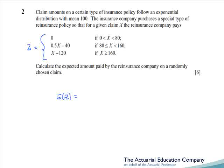To get e of z, we'll split our distribution up into three parts, 0 to 80, 80 to 160, and greater than 160. And then to find the mean, we just take the value of z,